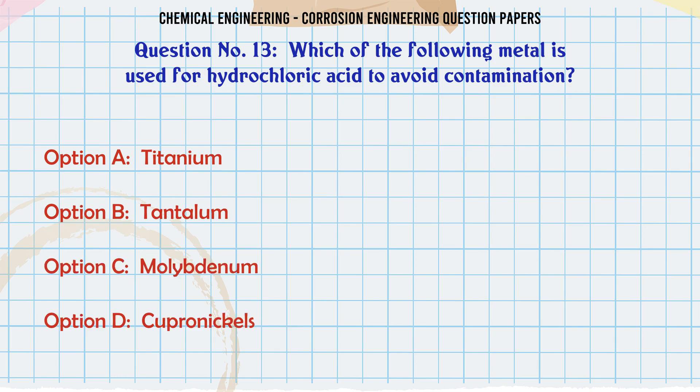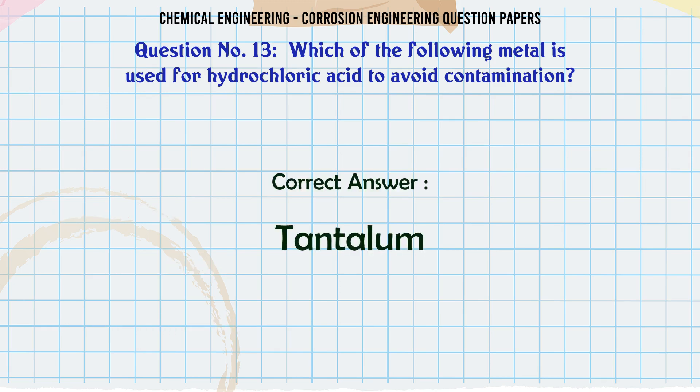Which of the following metals is used for hydrochloric acid to avoid contamination? A. Titanium. B. Tantalum. C. Molybdenum. D. Cupronicels. The correct answer is: Tantalum.